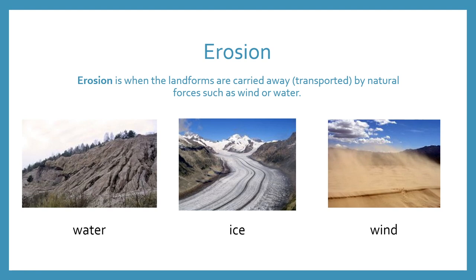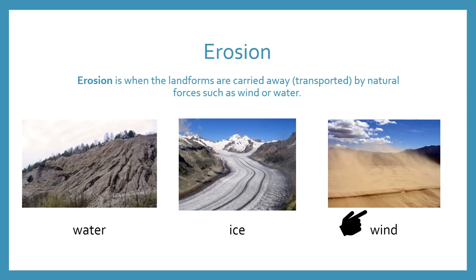Now let's learn more about erosion. Erosion is when the landforms are carried away or transported by natural forces such as wind or water. The first picture shows water erosion — you'll notice the water has moved the rock to create streams between the rock. The next picture shows erosion caused by ice; it looks like the ice has moved the rock to create a path. The last picture shows wind erosion — the wind is moving the sand.